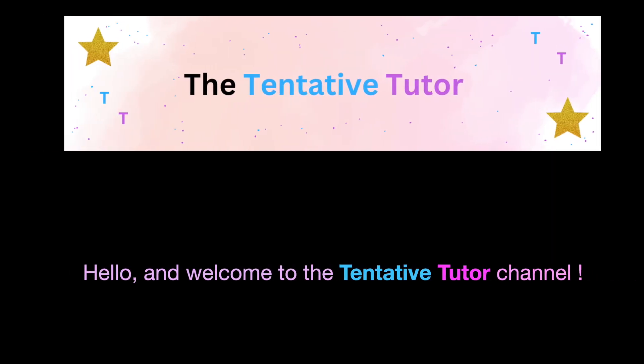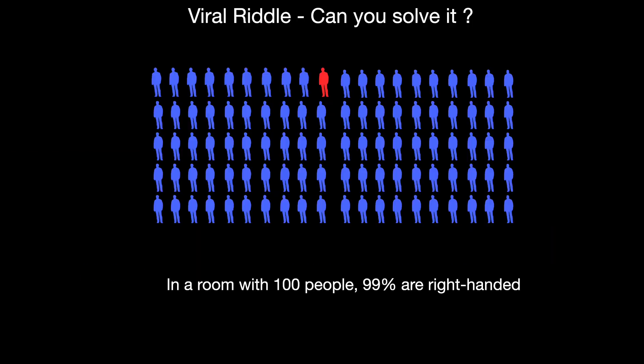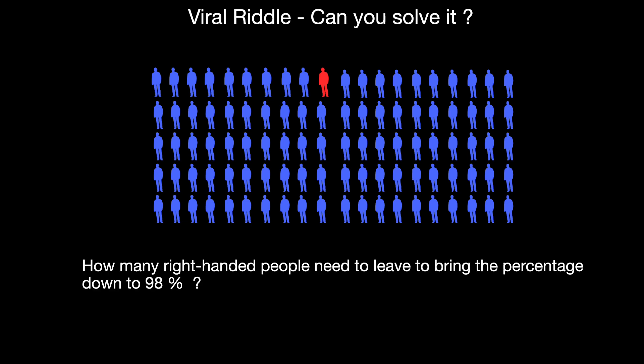Hello and welcome to the tentative tutor channel. Can you solve this viral riddle? In a room with 100 people, 99% are right-handed. How many right-handed people need to leave to bring the percentage down to 98%?